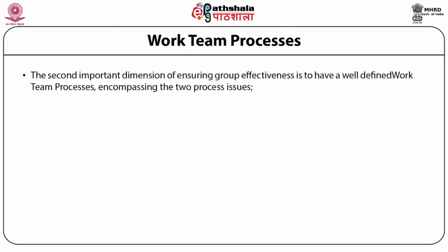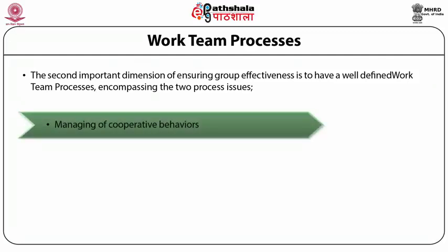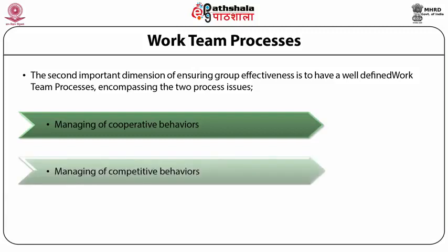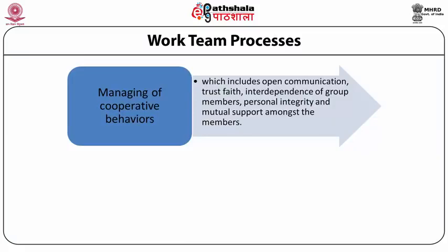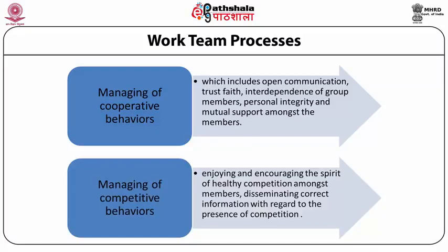Work team processes — the second dimension of ensuring group effectiveness — encompass two process issues: managing cooperative behaviors and managing competitive behaviors. Managing cooperative behaviors includes open communication, trust, faith, interdependence of group members, personal integrity, and mutual support among members. Managing competitive behaviors involves disseminating correct information with regard to the presence of competition.